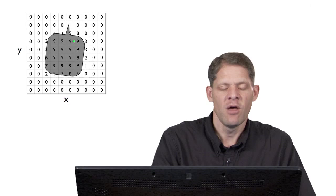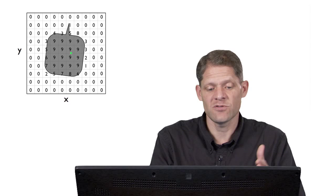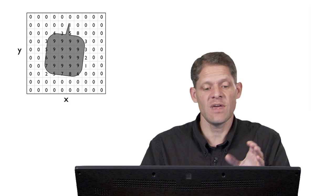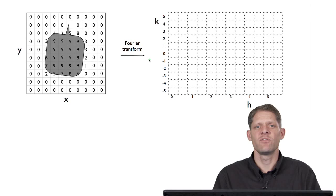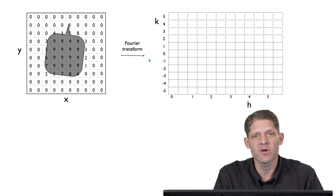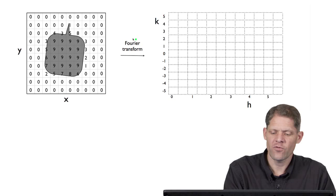What would it look like if we sent that digital image to a Fourier transform routine in the computer? What would it reply with? It turns out that the output of the Fourier transform routine will be another two-dimensional array of numbers, and the pattern of numbers is readily understood. The Fourier transform of this two-dimensional image will be a two-dimensional array of numbers.